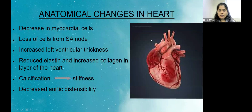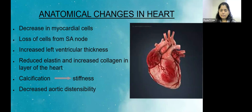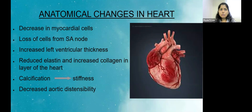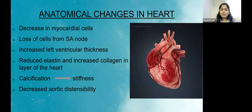Anatomical changes in the heart occurring with aging include a decrease in myocardial cells — the actual muscle mass is decreasing. There is loss of cells from the SA node, which is the pacemaker of the heart, so this will eventually affect the heartbeat. There is increased left ventricular thickness, reduced elastin and increased collagen in the layers of the heart, calcification leading to stiffness, and reduced distensibility of the aorta.